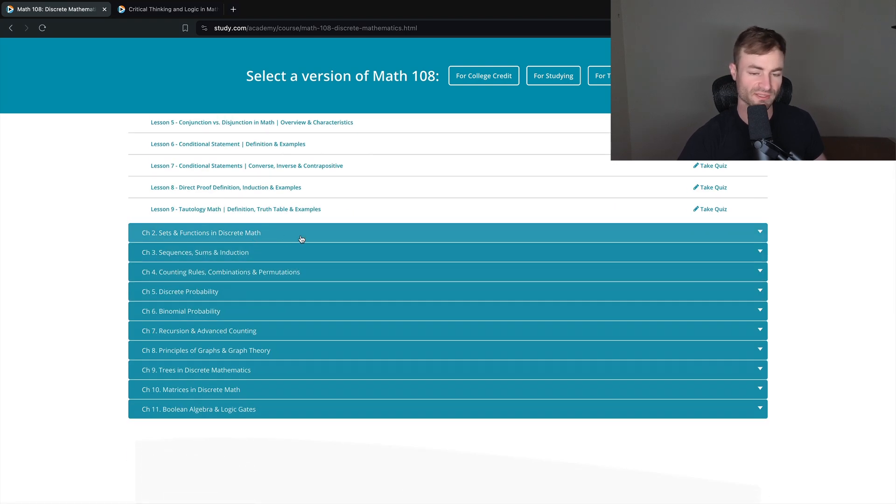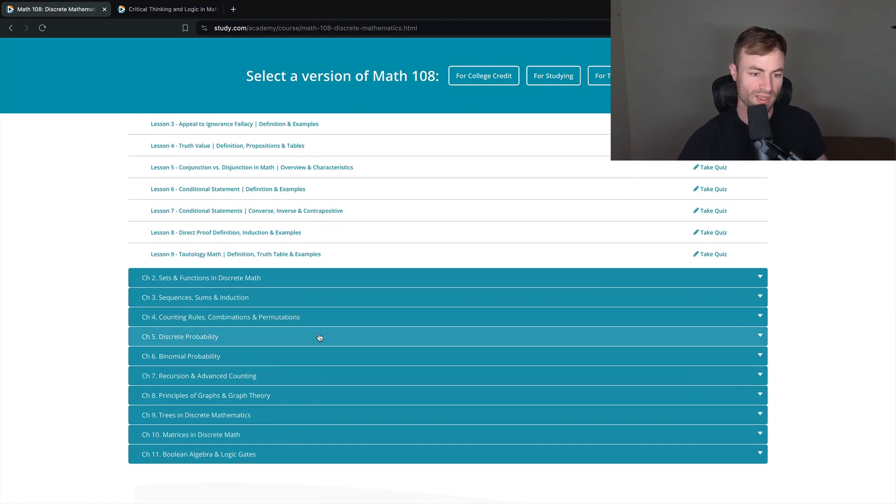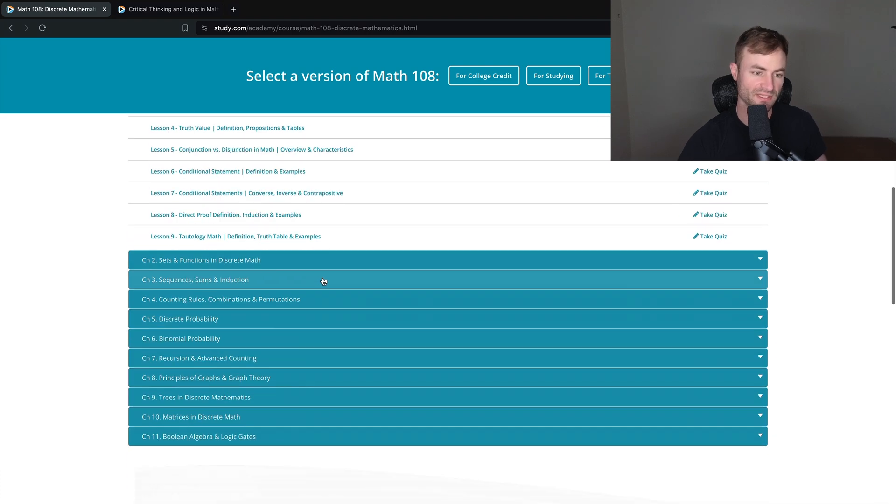Chapter two is sets and functions, which is another huge part of discrete math. Sequences, sums, and induction. Counting rules, discrete probability, which is huge as well. Binomial probability. Recursion. Recursion is actually one of the chapters I struggled on quite a bit. Principles of graph. I struggled a little bit on that one as well. And then trees, I did well in. And then matrices is another one that kind of kicked my butt a little bit. Chapter 11, I actually did pretty good on if I remember correctly. It was like probably two and a half years when I took this. So, I don't remember exactly what I did well on and what I struggled on.